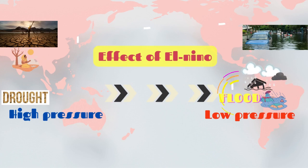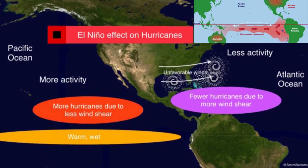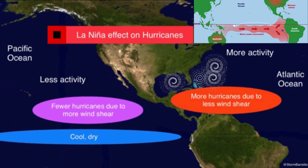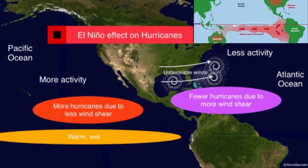For example, El Niño is often associated with increased rainfall in some regions, especially in South America, leading to flooding, while other areas like India, Australia, and South Asian countries may experience drought conditions. In addition, El Niño can influence the behavior of the jet stream, leading to more severe storms, hurricanes, and even changes in temperature and precipitation patterns in regions as far away as North America.